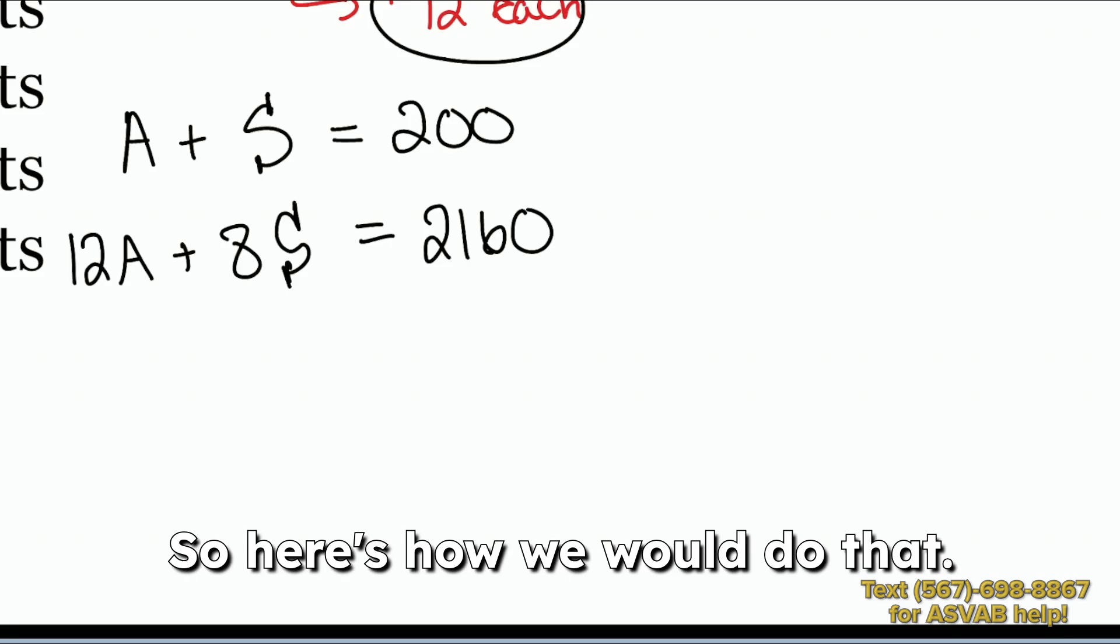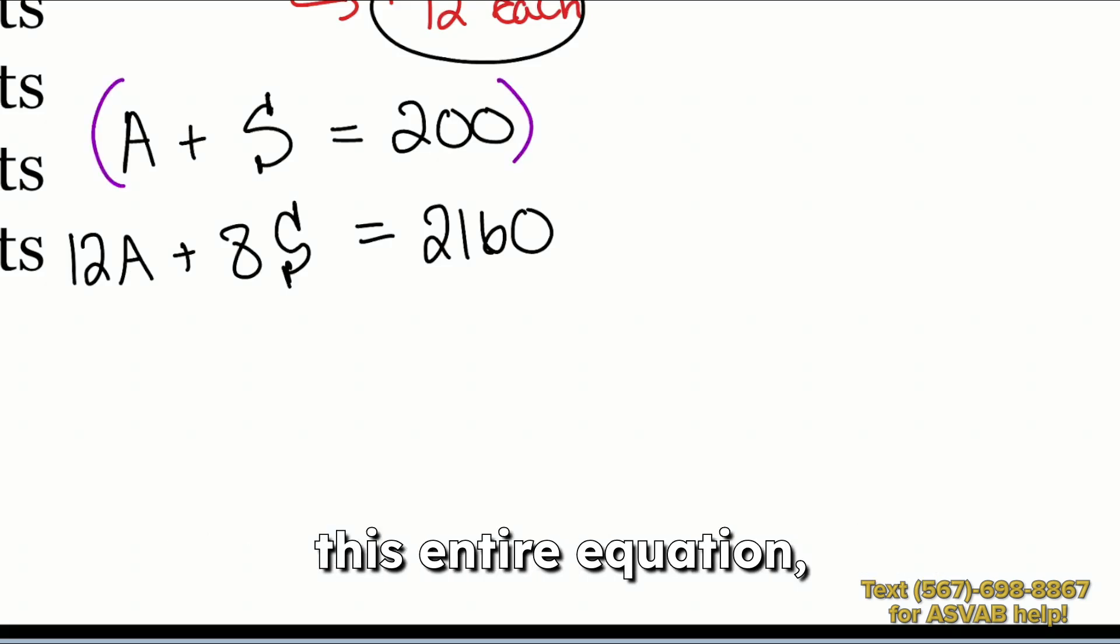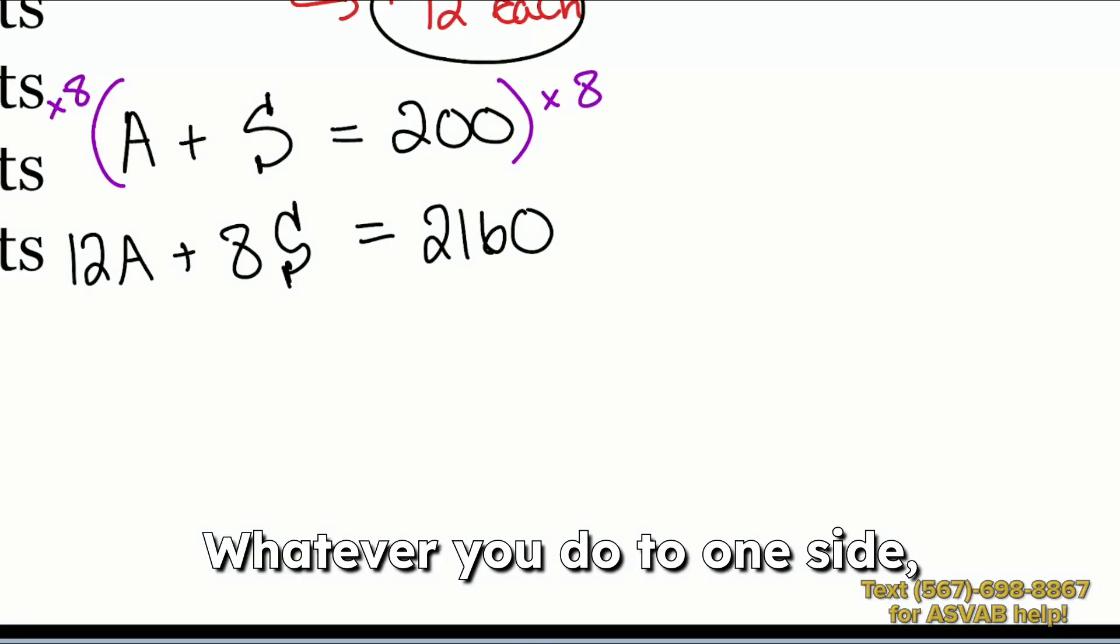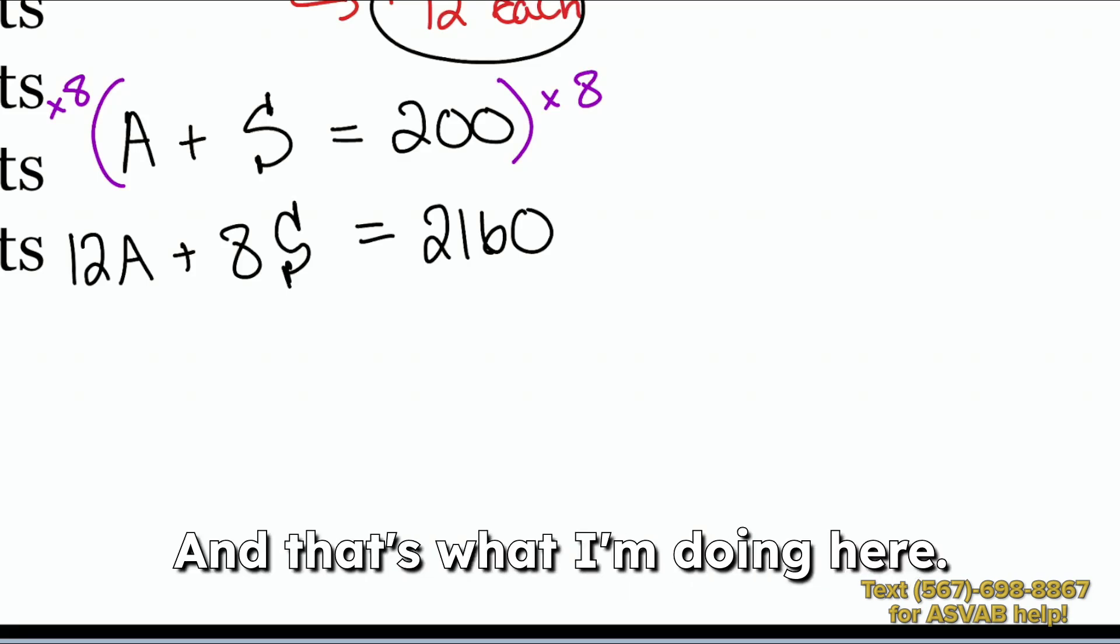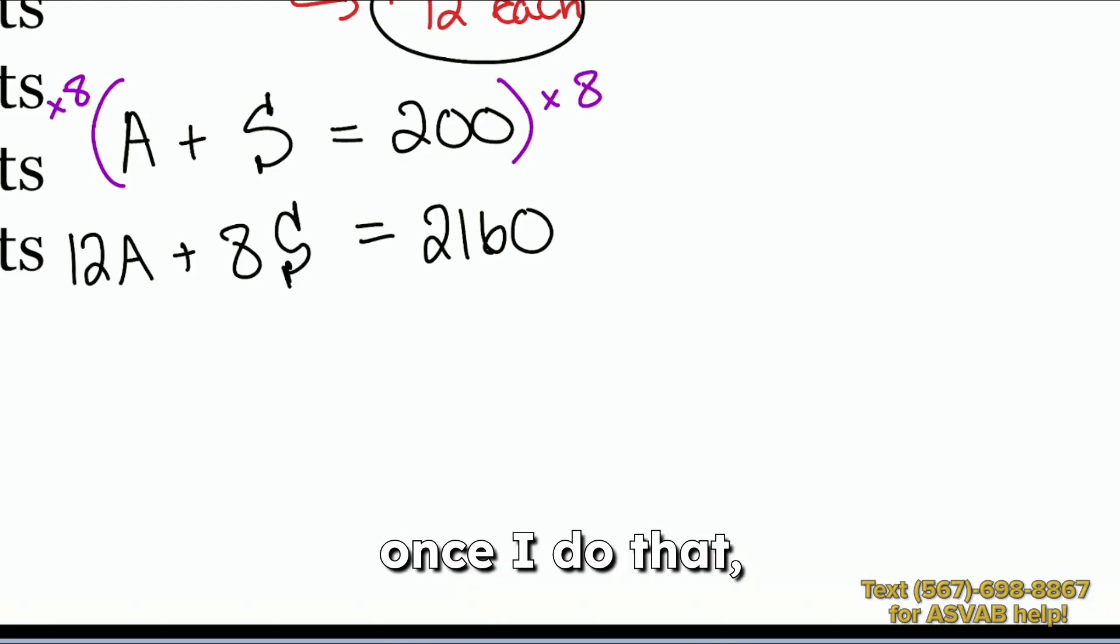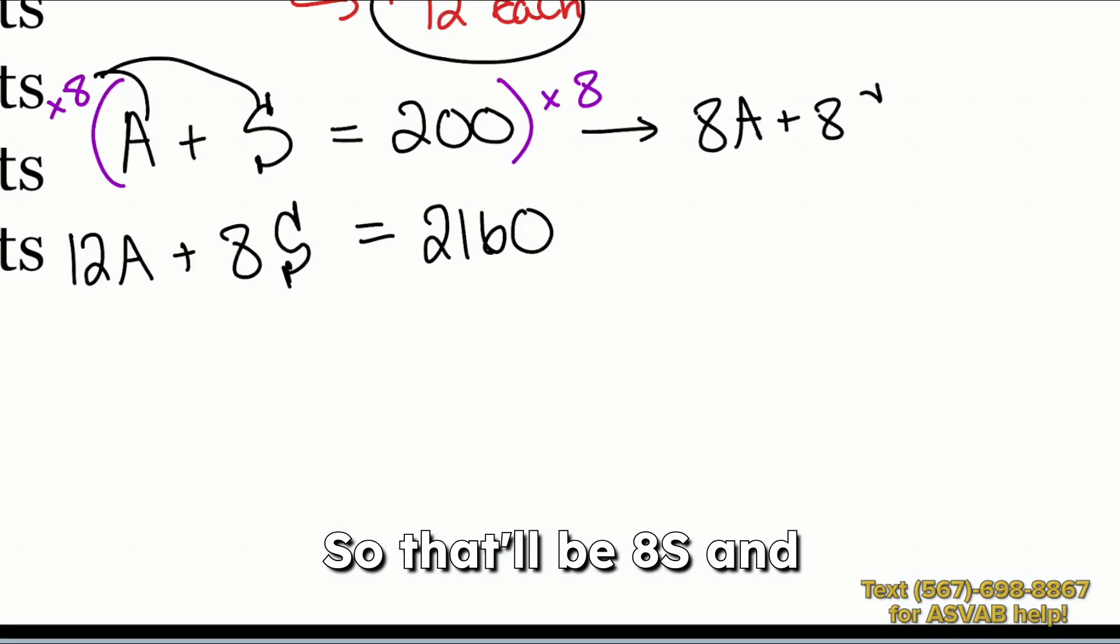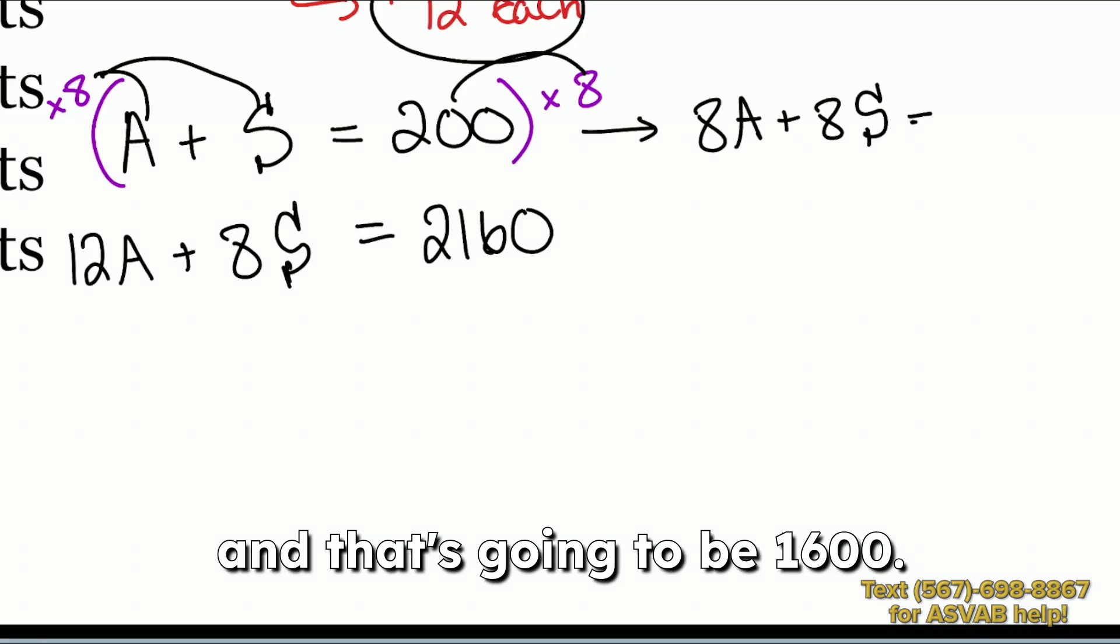So here's how we would do that. I would go ahead and multiply this entire equation, the left side and the right side. I'm going to multiply it by 8. Again, whatever you do to one side, you're perfectly allowed to do to the other. And that's what I'm doing here. So with that said, once I do that, we'll have 8 times A. So 8A. 8 times S. So that'll be 8S. And then 8 times 200. And that's going to be 1600.